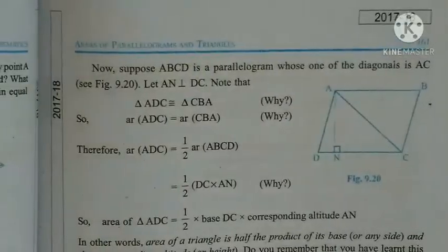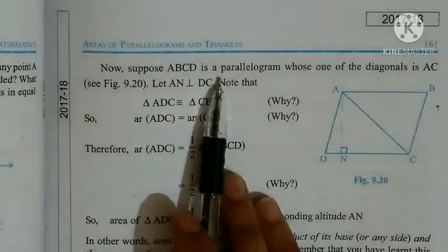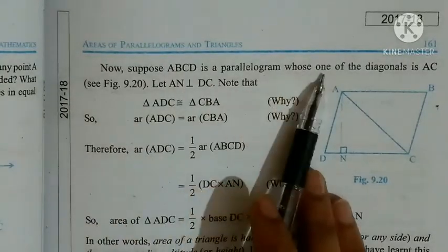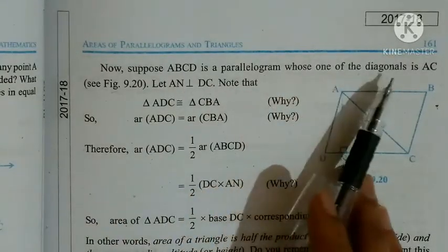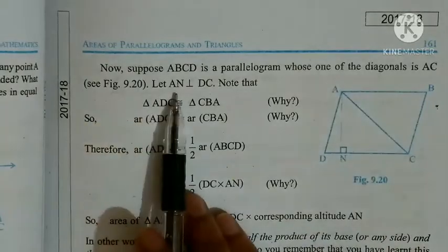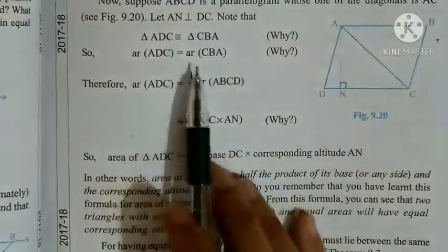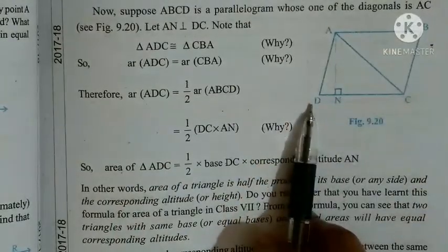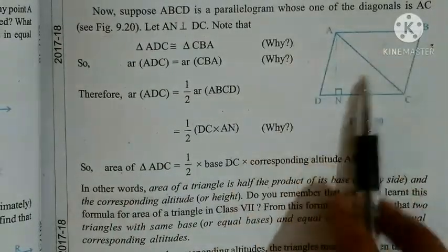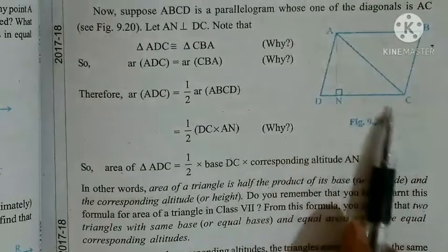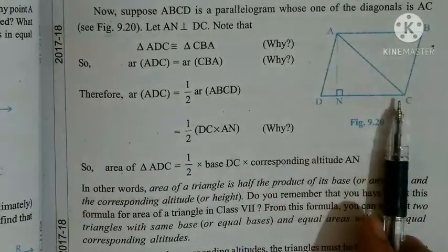Dhekhe hai, ham yahaan. Now, suppose ABCD is a parallelogram whose one of the diagonals is AC. ABCD is a parallelogram, jiska diagonal AC hai. Let AN perpendicular DC.